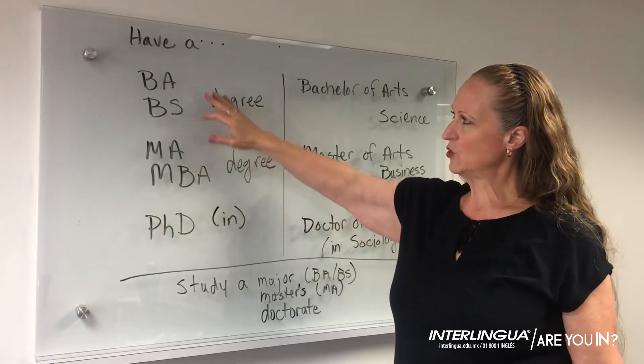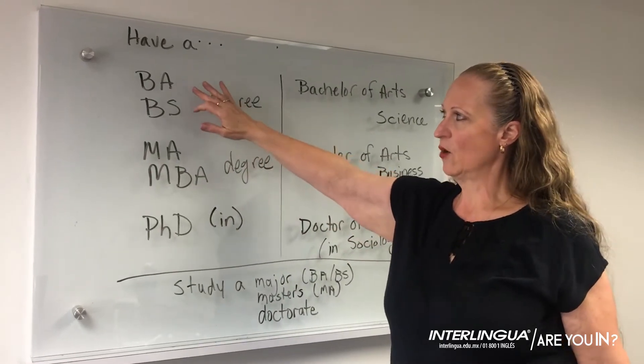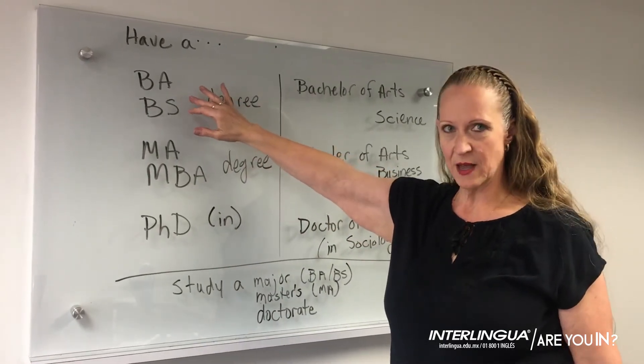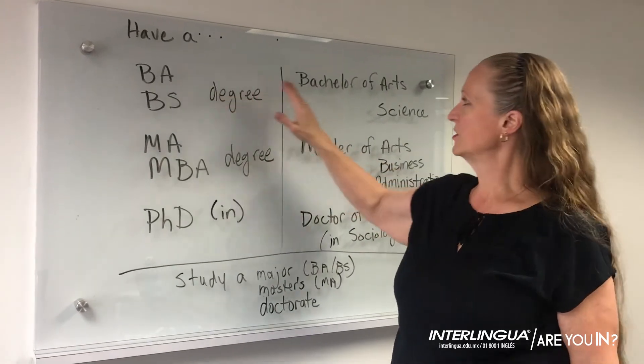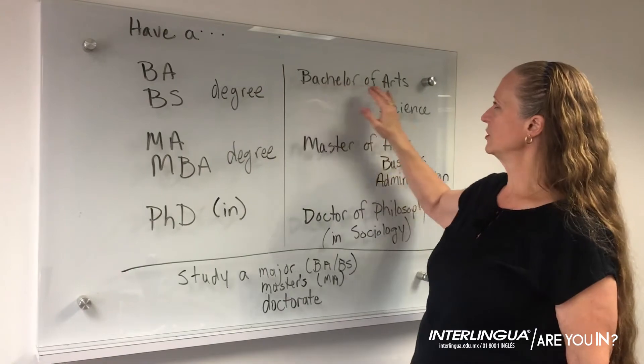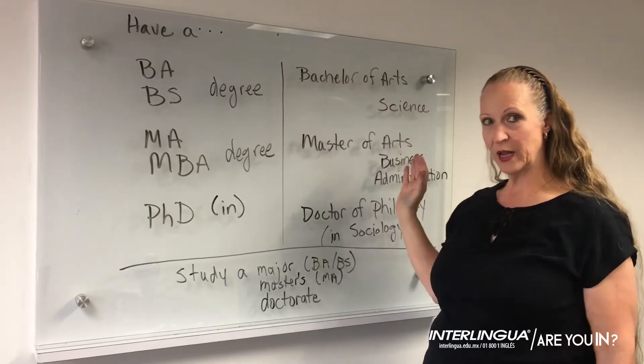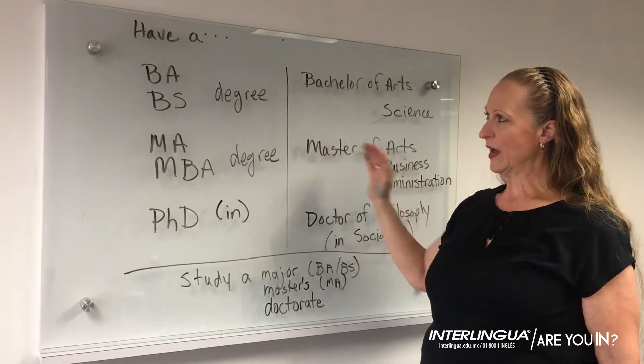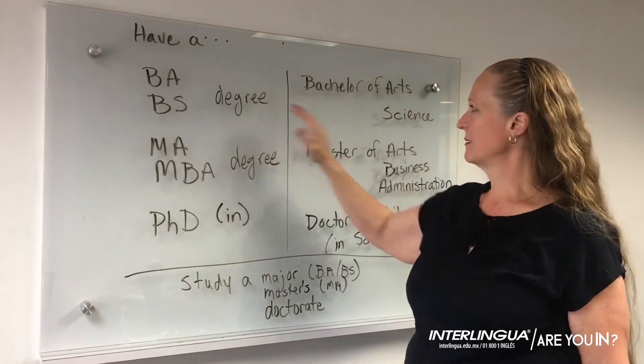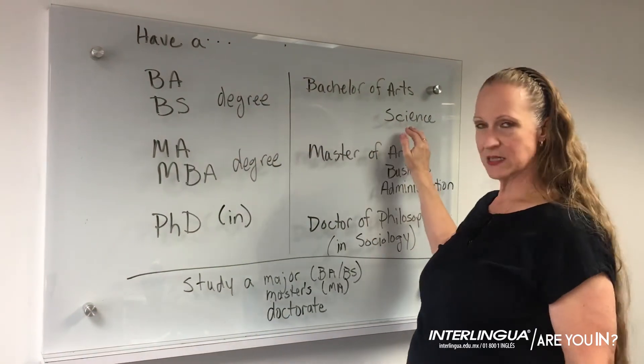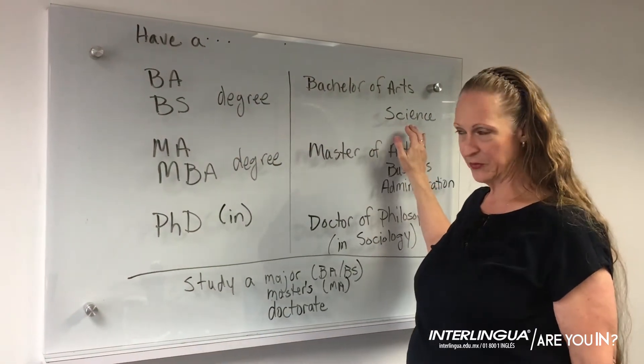We would say that you have a BA or a BS. A BA means that you have a Bachelor of Arts degree, or a BS is a Bachelor of Science degree.